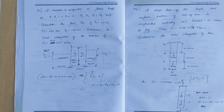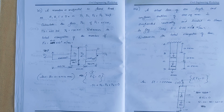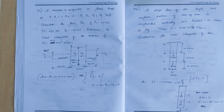A steel bar of 2 m length and uniform cross-section of 600 mm² is suspended vertically and loaded as shown in the figure. Taking E equal to 2.05 into 10 power 5 N/mm², determine the total elongation of the bar.